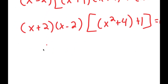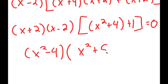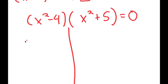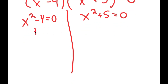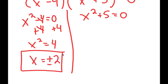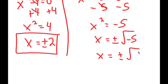Factoring out both (x+2) and (x-2), I get (x+2)(x-2)(x^2+4+1) equals 0, which is (x^2-4)(x^2+5) equals 0. This gives two equations: x^2 minus 4 equals 0, and x^2 plus 5 equals 0. From the first: x^2 equals 4, so x equals positive or negative 2. From the second: x^2 equals negative 5, so x equals positive or negative square root of 5 times i (complex solutions).